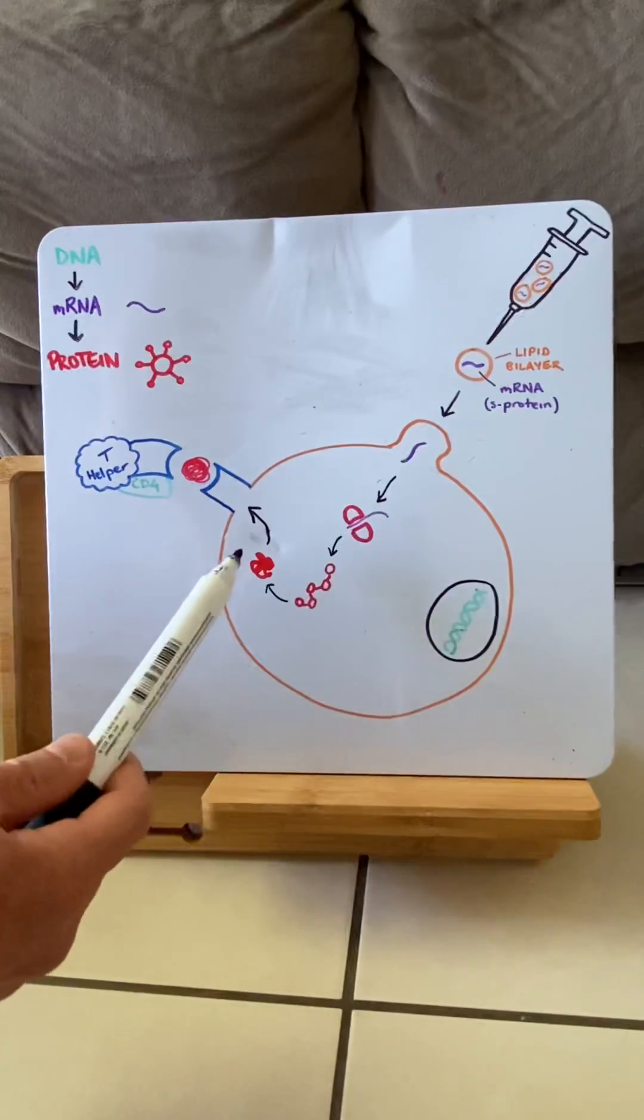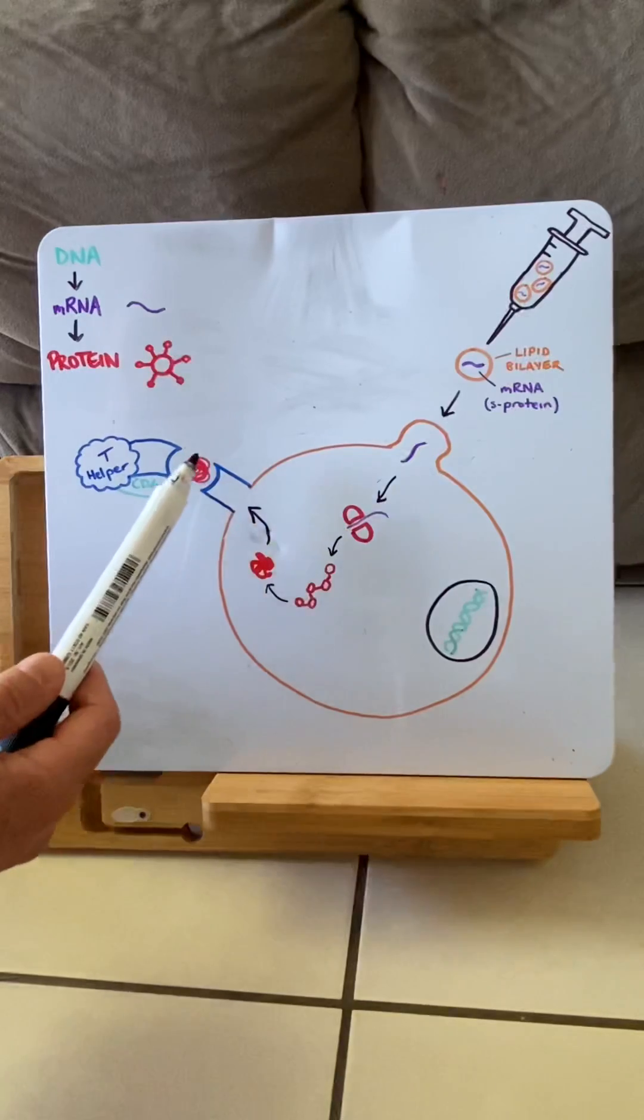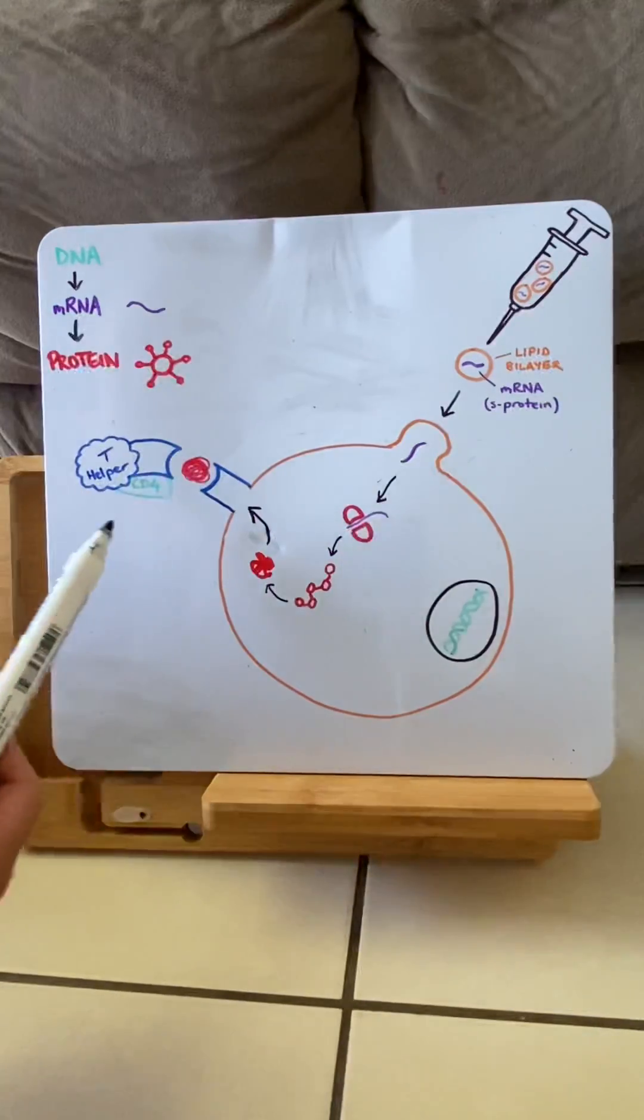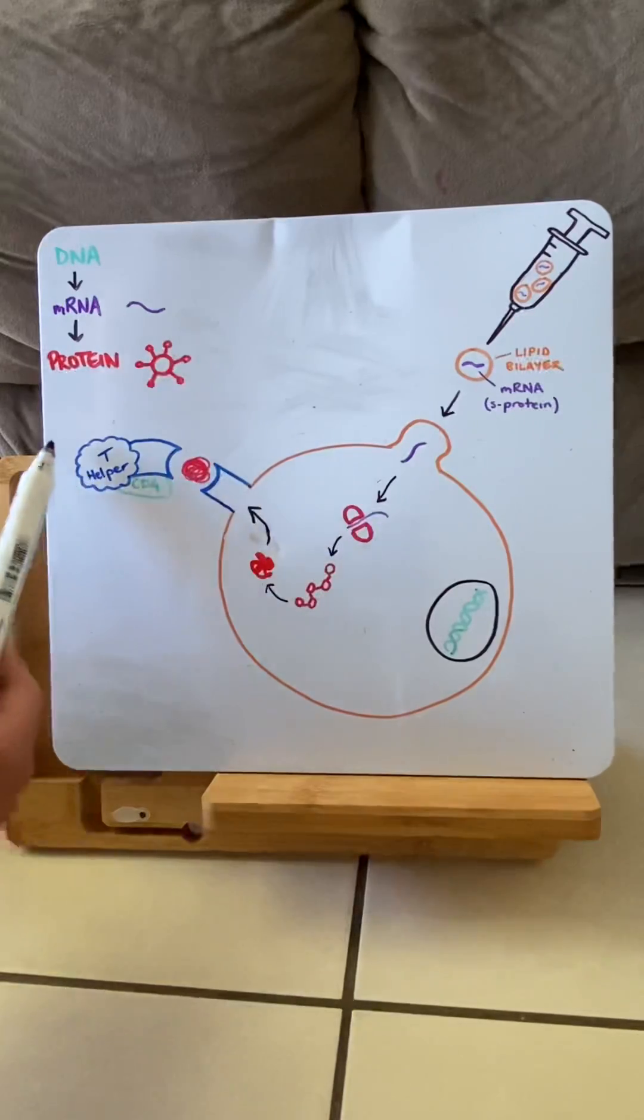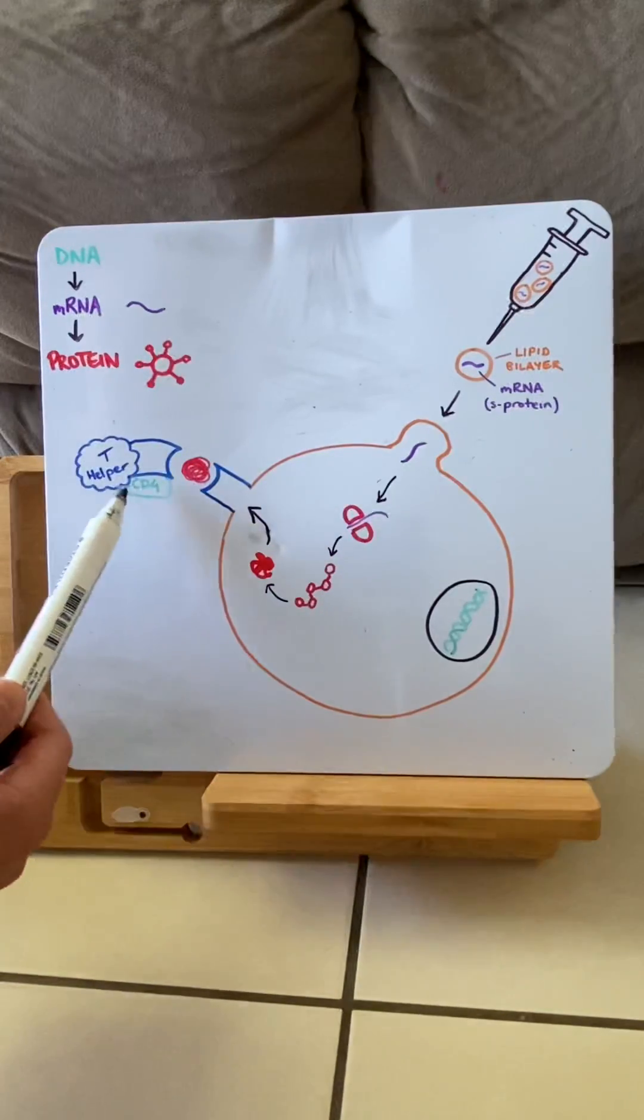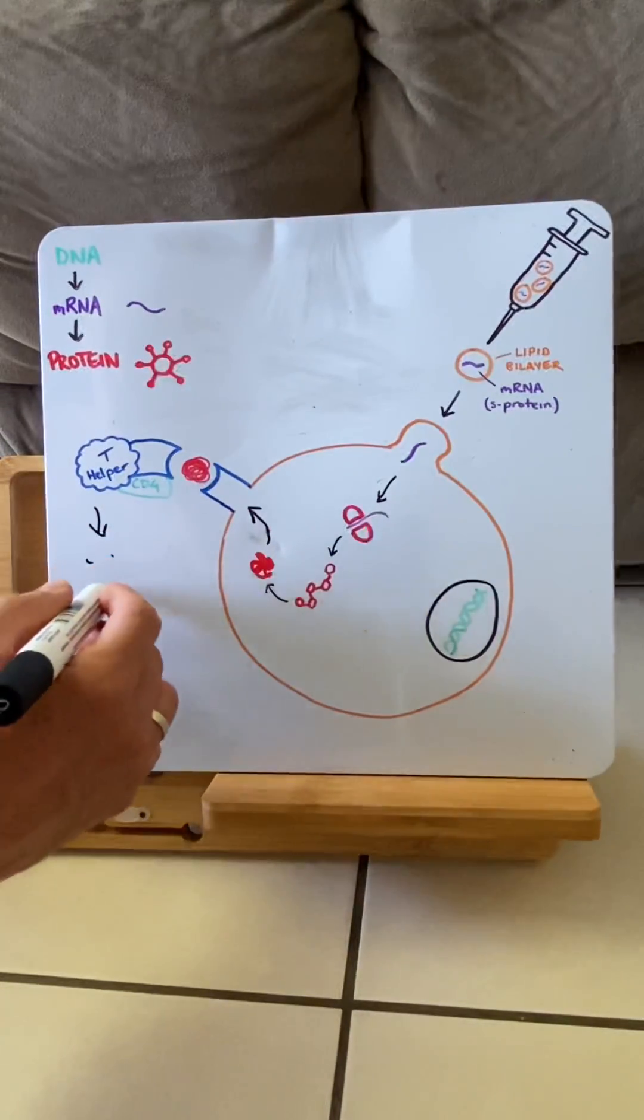But the body recognizes that this protein does not belong to us. So it presents it on the surface of certain cells. These cells are phagocytic cells, so macrophages and dendritic cells. And with the protein on the surface, it calls in T helper cells. With the CD4 complex together, T helper cells release cytokines.